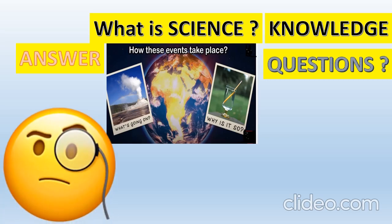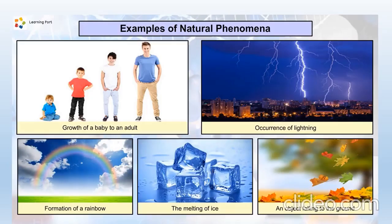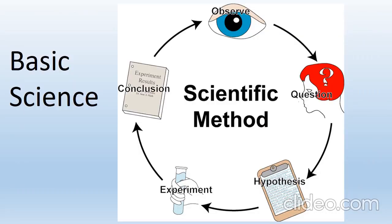It's about observing. Here are some examples of natural events occurring on Earth. Basic science follows a cycle.